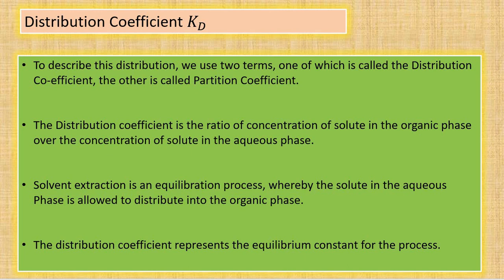Solvent extraction is an equilibrium process. The solute is dissolved in both phases — it is an equilibration process where solute is dissolved in the aqueous phase and is allowed to distribute in both phases. The distribution coefficient represents the equilibrium constant for this process.